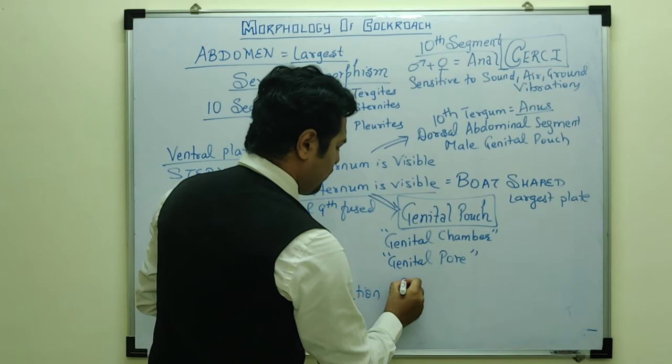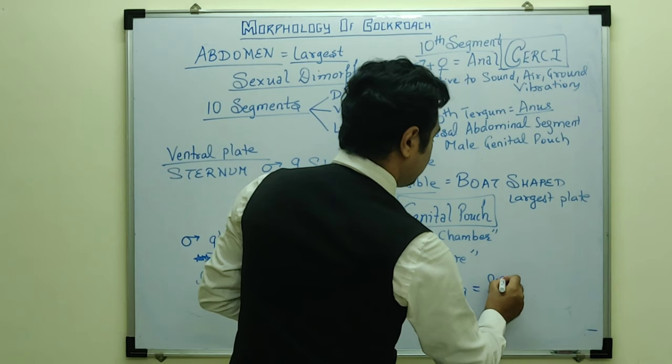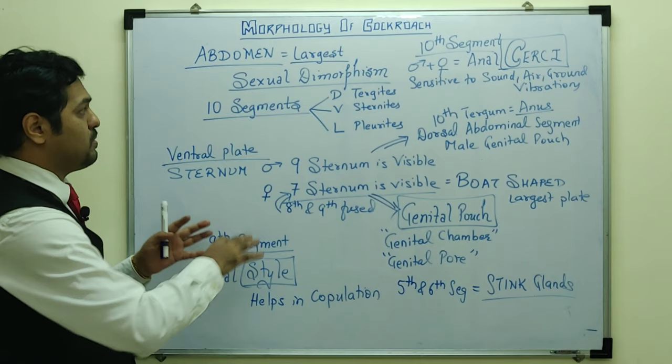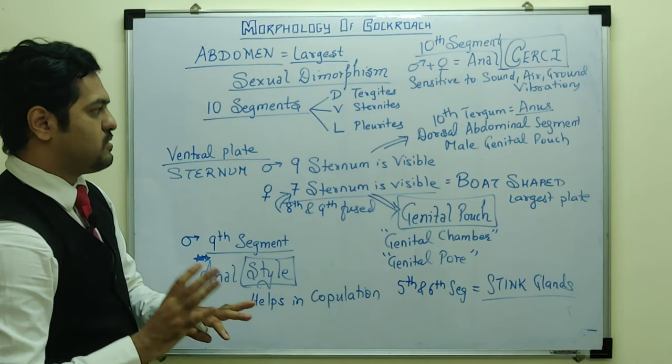Another important point: around the fifth and sixth segments there are presence of stink glands. Stink glands produce a foul, stinky odor which helps to repel enemies. This is a defense mechanism present in the abdomen.